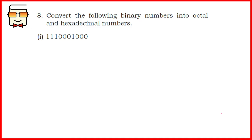This question asks you to convert binary numbers into octal as well as hexadecimal numbers. The procedure for binary to octal: we group binary digits into groups of 3. For the non-fractional part we group from right to left, and for the fractional part from left to right. For binary to hexadecimal, the same procedure applies but we group in groups of 4.